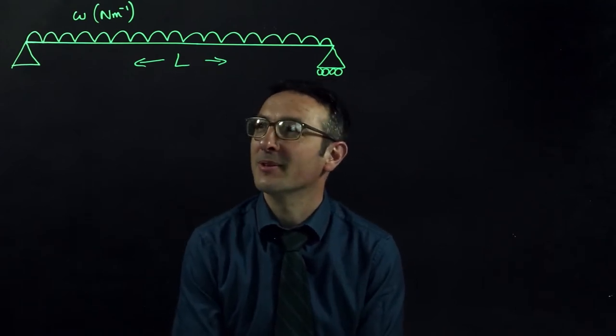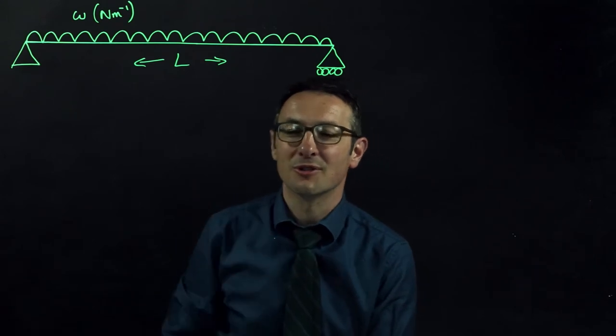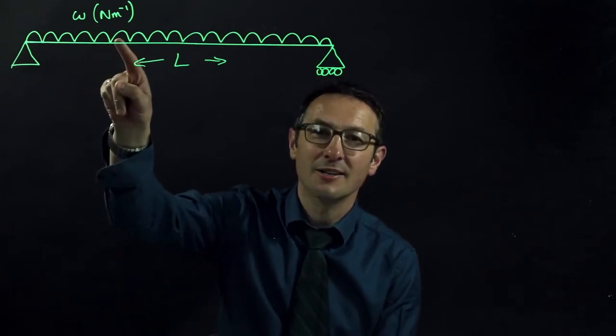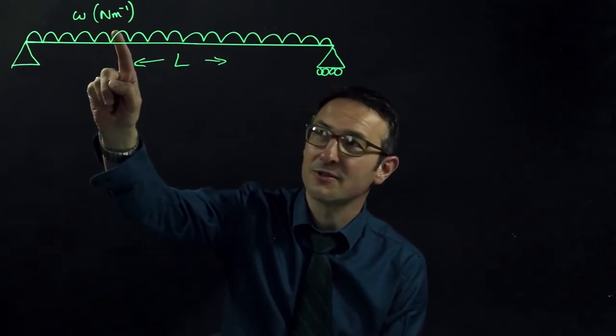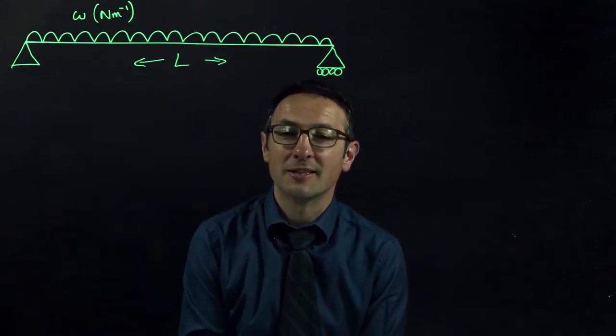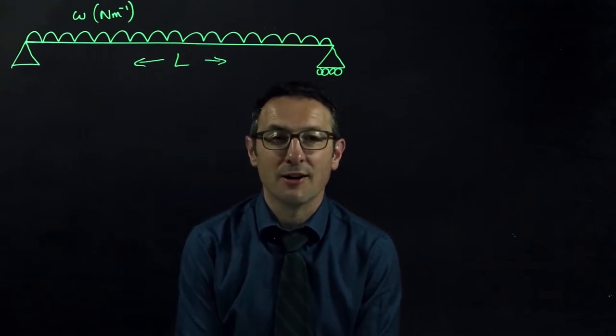It's a beam, it's got a pinned connection at one end and a roller support at the other end. The squiggly lines here is a uniformly distributed load that I'm going to call W which has units of something like newtons per meter and the beam is of length L so everything is completely general.